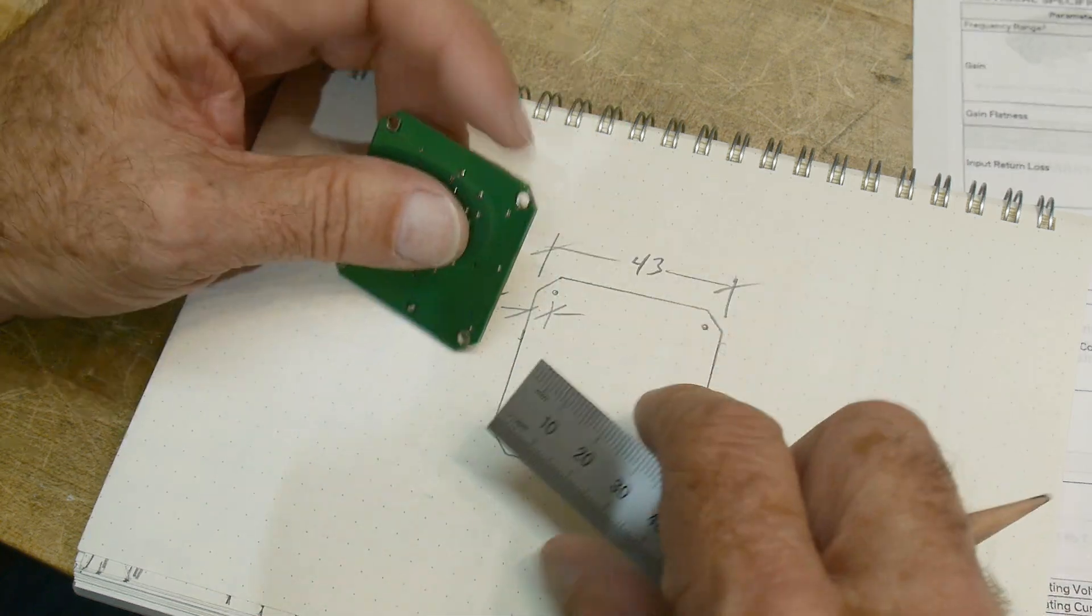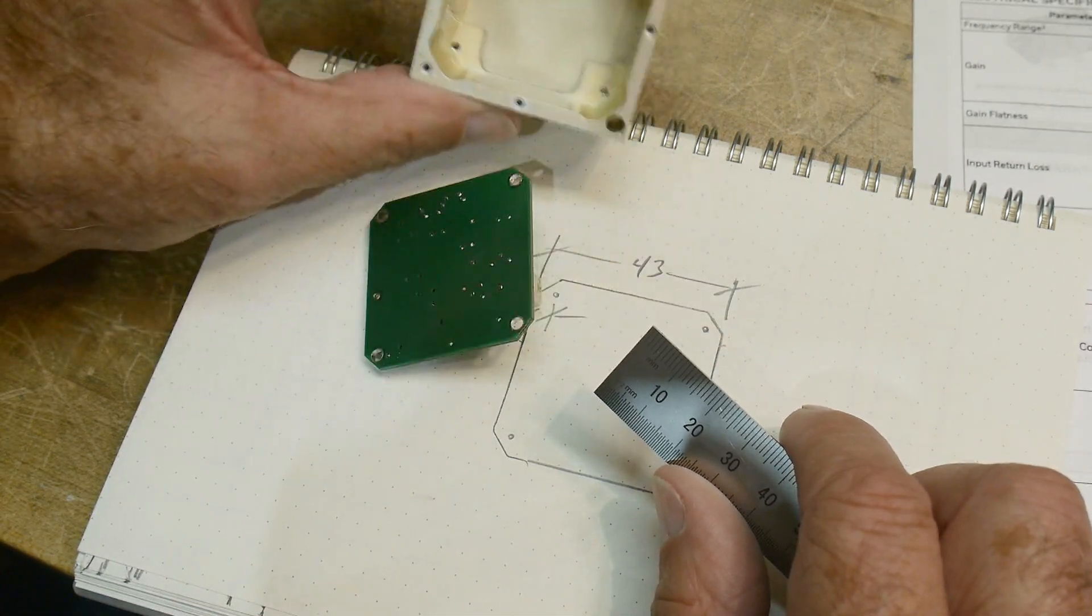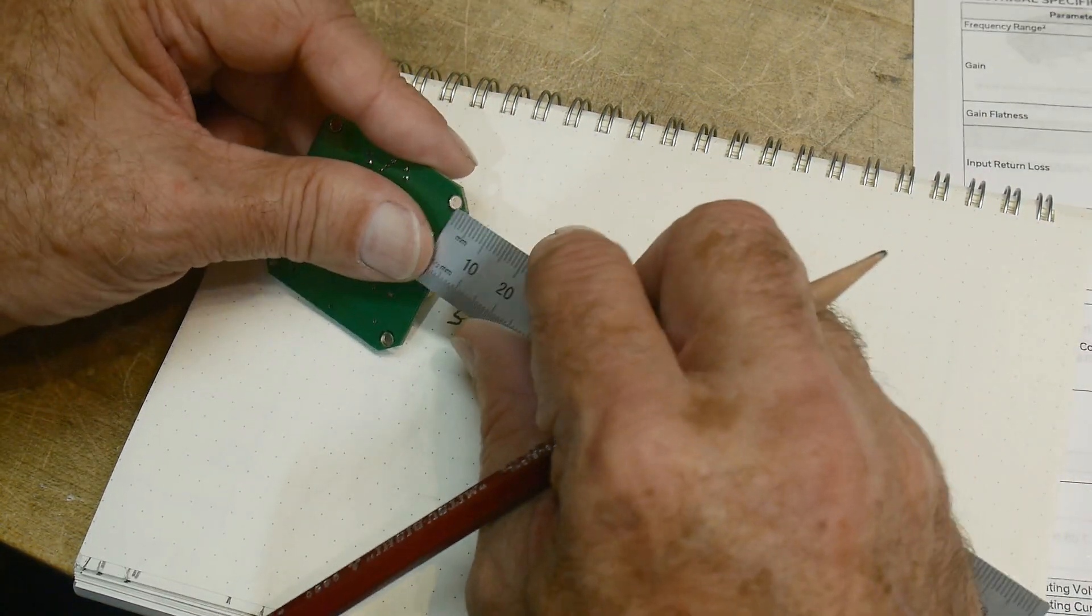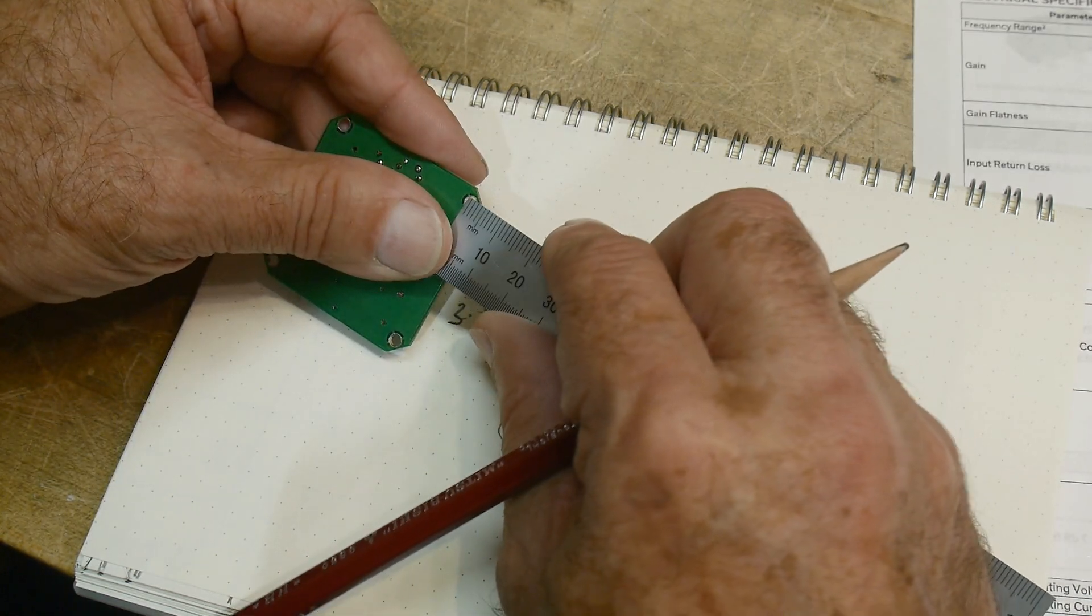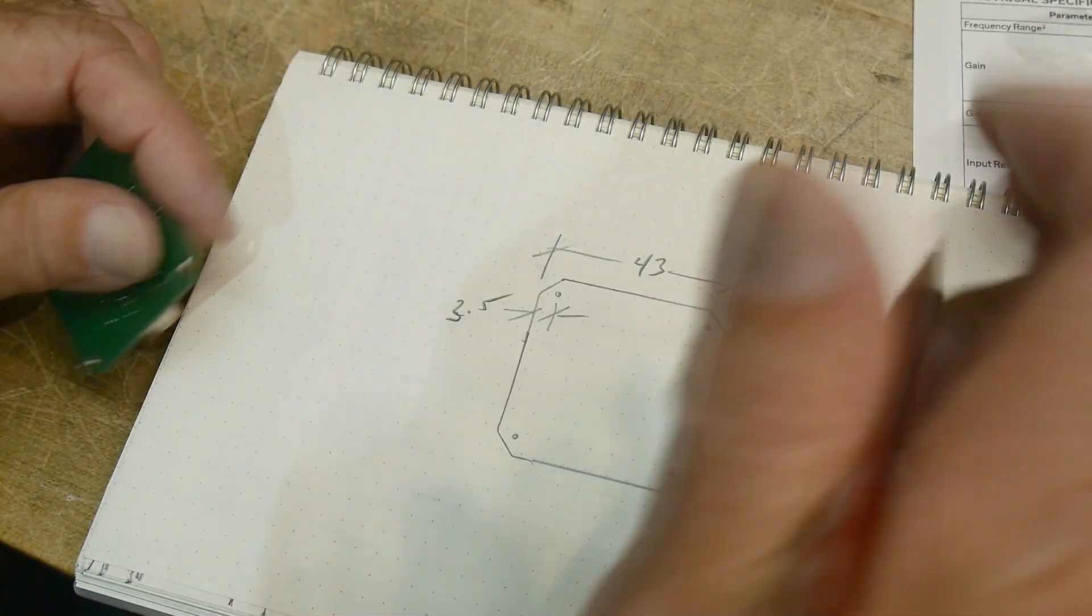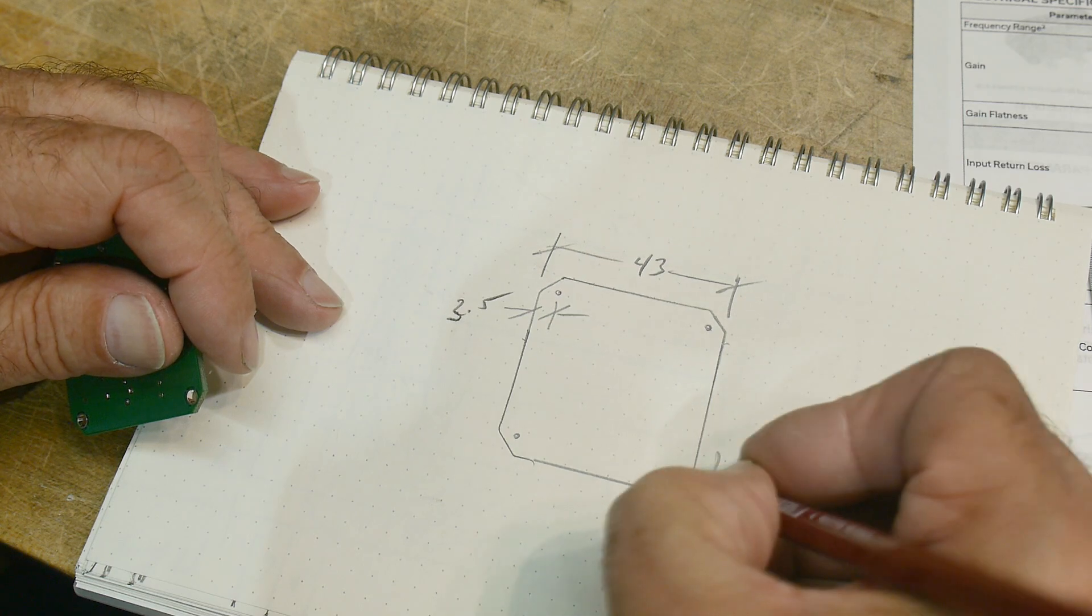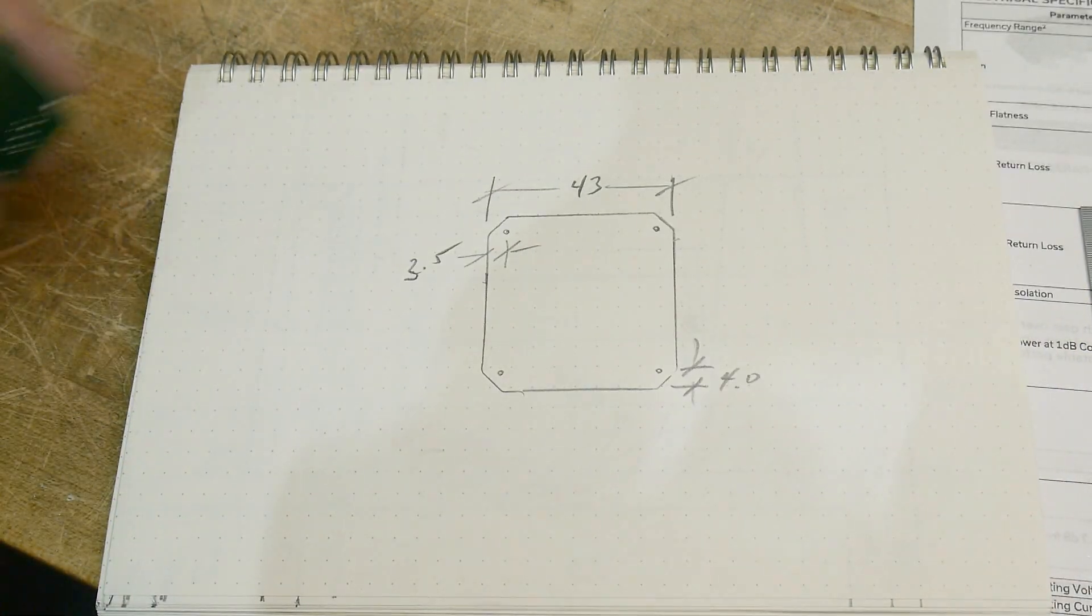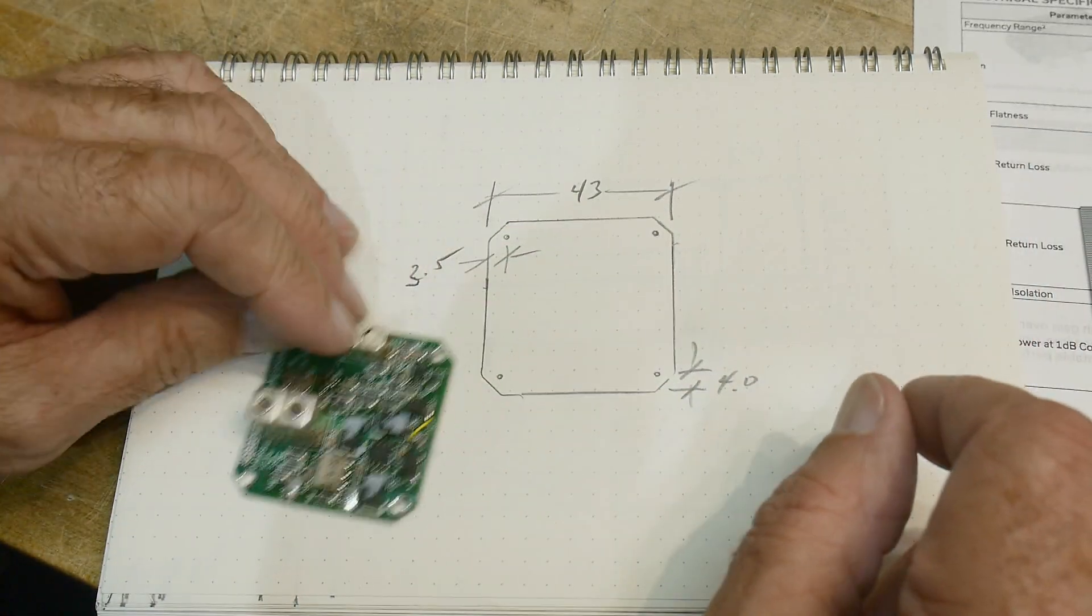And then the little chamfer is necessary. All right, so the chamfer is going to be about four, five, four here. Yeah, so the chamfer is going to be about four point zero. All right, so there is our mechanical drawing. Nope, nope, we're not done. We're not done.